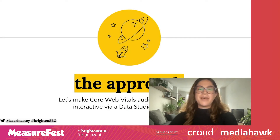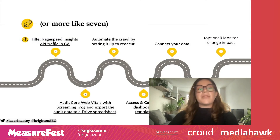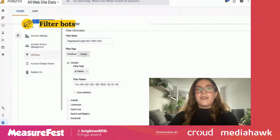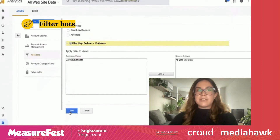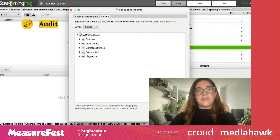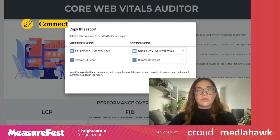So what can we do about it? Let's make Core Web Vitals interactive using Data Studio — just plug and play in three simple steps. First, bulk audit the Core Web Vitals with Screaming Frog. Then copy the Data Studio dashboard and connect your data. Well, it might be more like seven steps. First, you would need to filter the bot traffic from the PageSpeed Insights API in Google Analytics. Then audit Core Web Vitals with Screaming Frog and export your crawl to a Drive spreadsheet. Then access and copy the dashboard template and connect your data to it — you'll have two data sources: one for the Chrome UX report and one for your crawl.